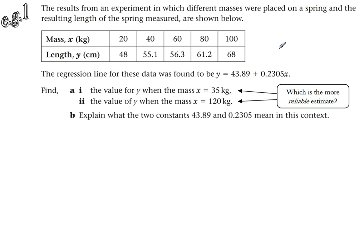Let's have a look at an example here. This is the one that we saw in part one. We did the regression line for this, comparing the length of the extension on a spring with the mass placed on it. It was a positive correlation and the extension increases as X increases. We want to find out the value of Y when the mass is 35 and when the mass is 120.